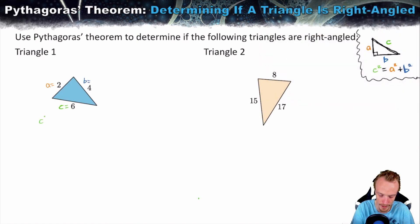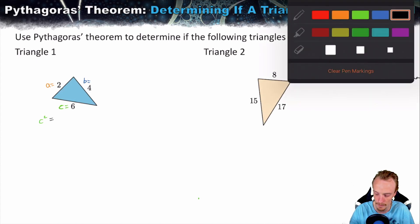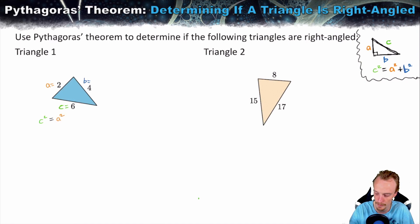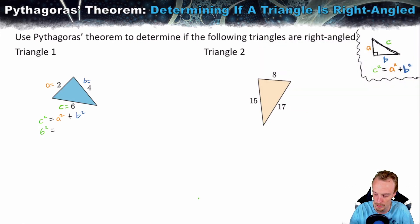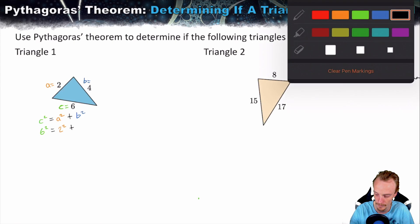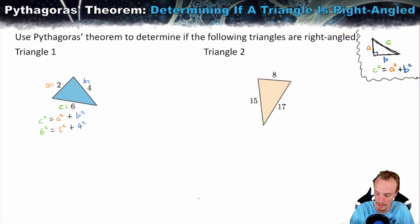The next step is to write out our formula. If this is right-angled: C squared equals A squared plus B squared. We're checking whether C squared equals A squared plus B squared. We substitute 6 for C, so that's 6 squared, equal to A squared — which is 2 squared — plus B squared, which is 4 squared.